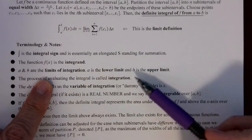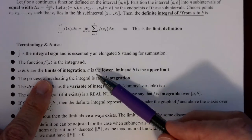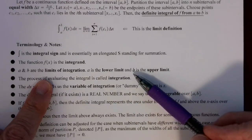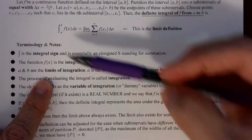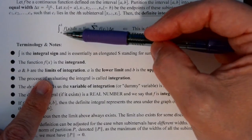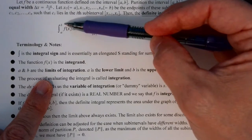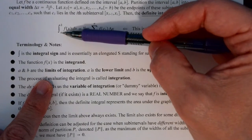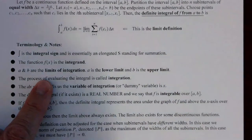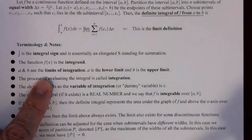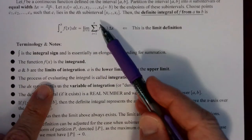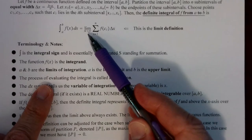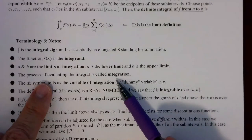The process of evaluating the integral — actually computing the summation and then pushing the limit as n goes to infinity and finding the value — is called integration. The dx symbol tells us the variable of integration, or the dummy variable, is x. This is essentially the same notation used with the derivative: in Leibniz notation, the derivative of y with respect to x is dy over dx.